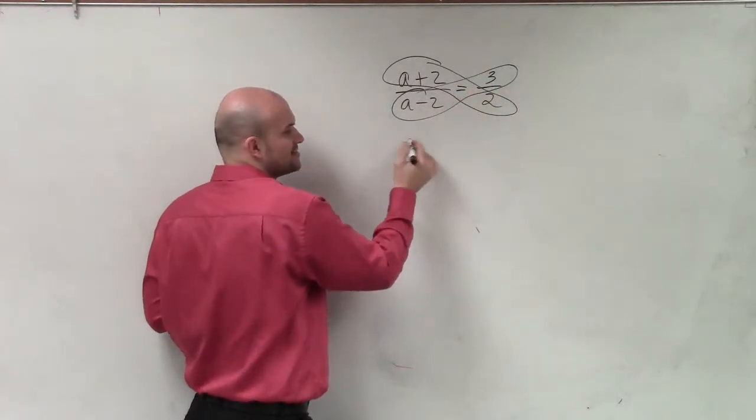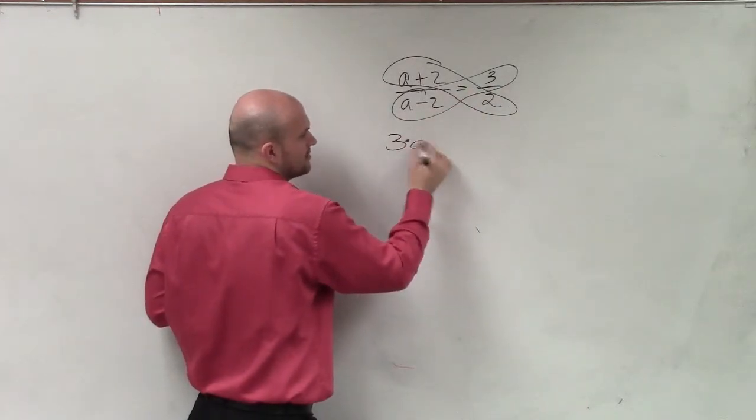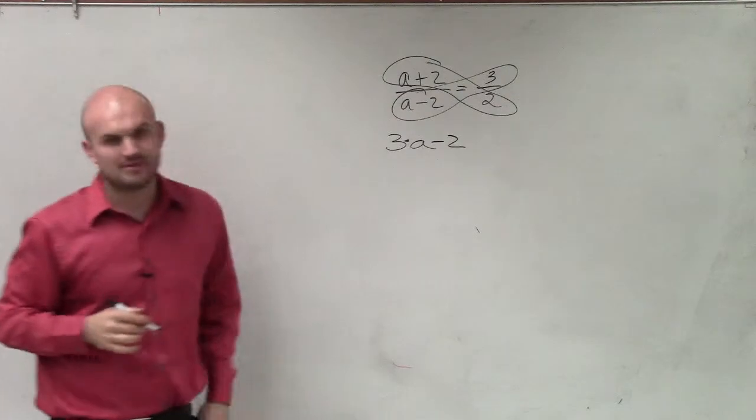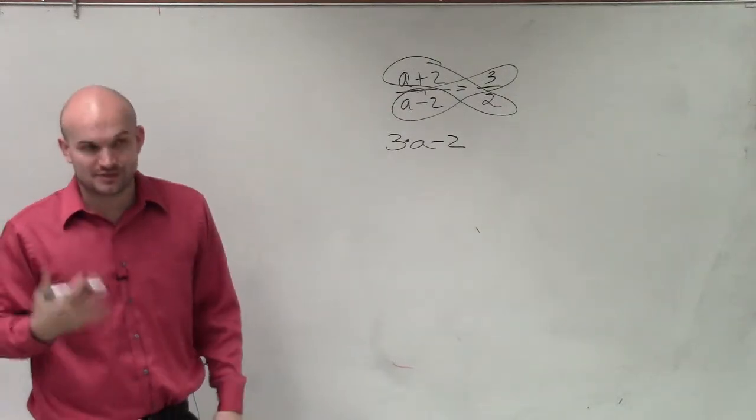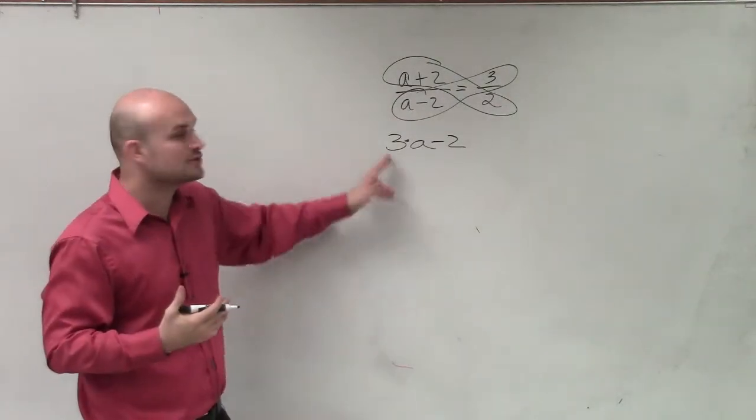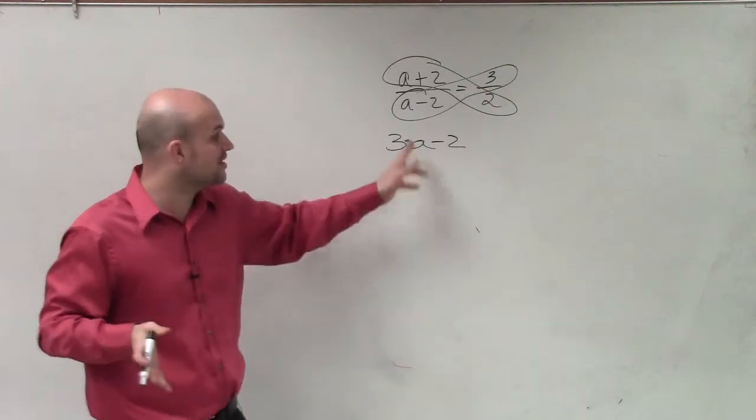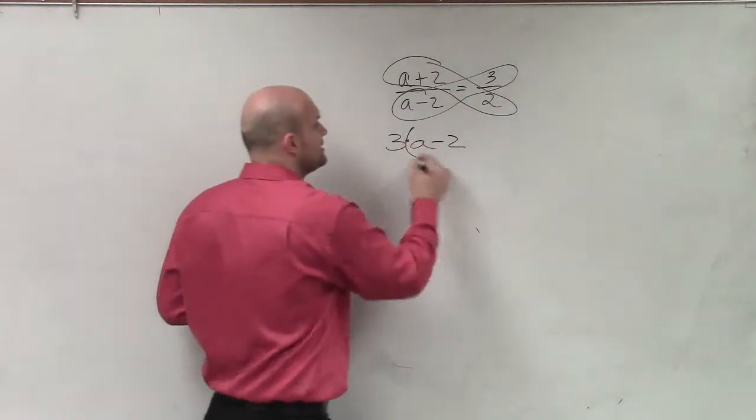This is 3 times a minus 2. Do not write this, because that says 3 times a minus 2. What we need to say is 3 times the difference of a minus 2. Please use parentheses.